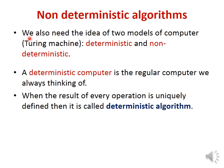Alan Turing introduced the concept of deterministic and non-deterministic computers. A deterministic computer is a model where execution happens sequentially. Every operation is uniquely defined, and there exists a distinct deterministic algorithm for execution. The regular computers we use, where operations happen sequentially, are examples of deterministic computers.